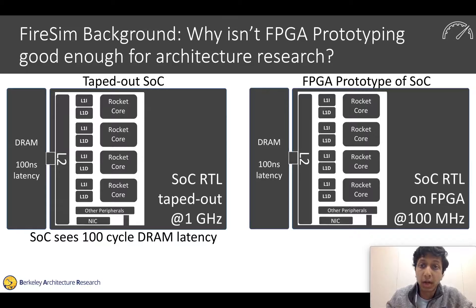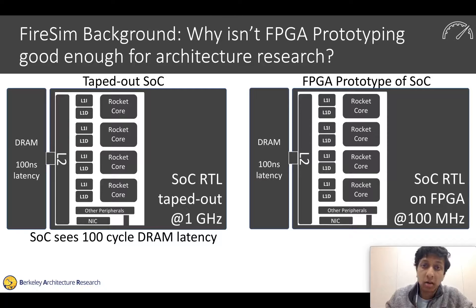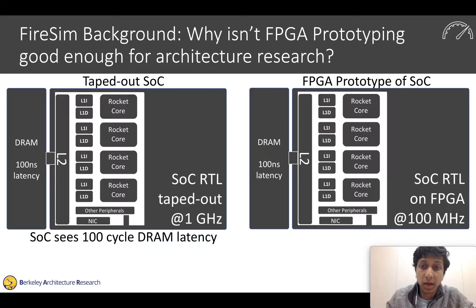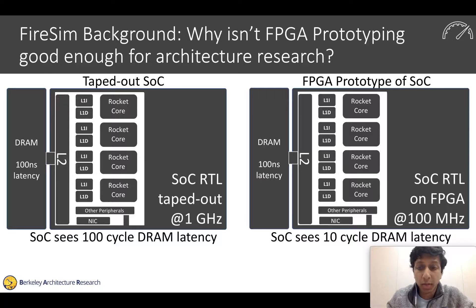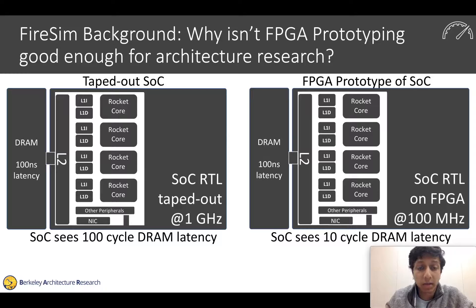On the other hand, if we build an FPGA prototype out of this RTL, that design will run at around 100 megahertz on the FPGA. But it'll still be attached to DRAM, which has 100 nanoseconds of latency. So if we run software on this FPGA prototype, the software will see incorrect DRAM latency — it'll just see 10 cycles of DRAM latency.